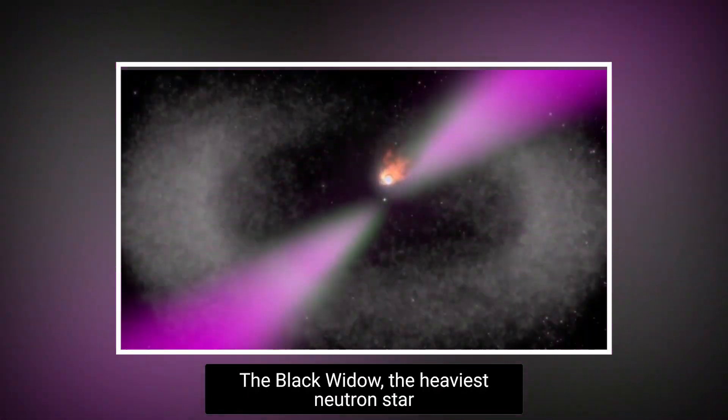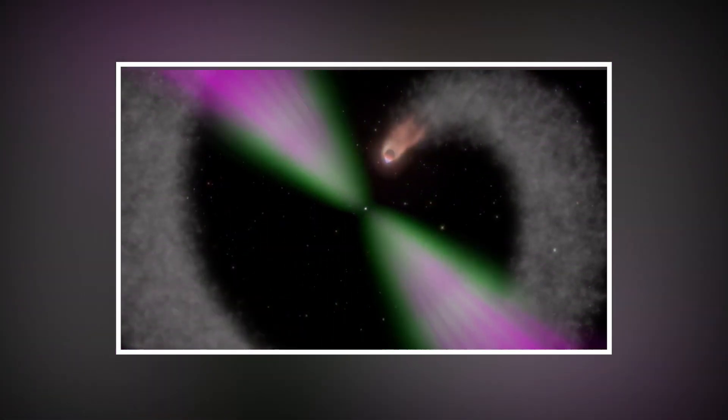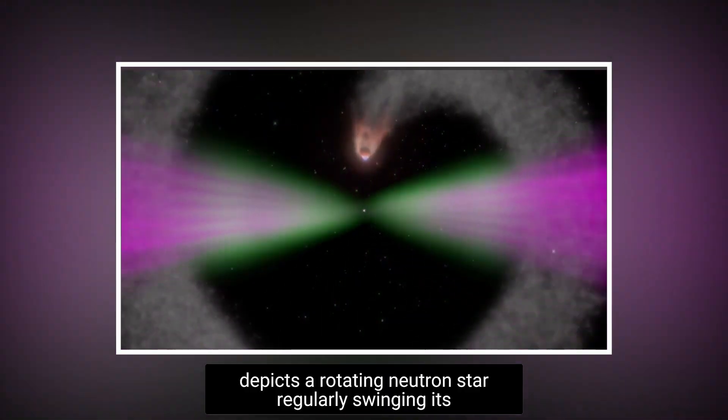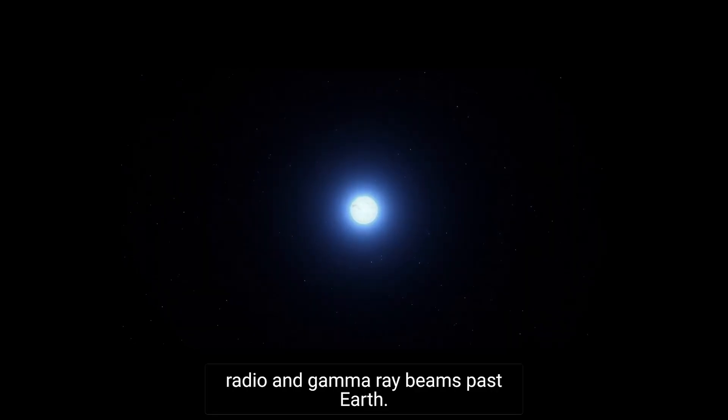The Black Widow, the heaviest neutron star so far discovered, is devouring its mate. This artist's conception of a Black Widow pulsar depicts a rotating neutron star regularly swinging its radio and gamma-ray beams past Earth.